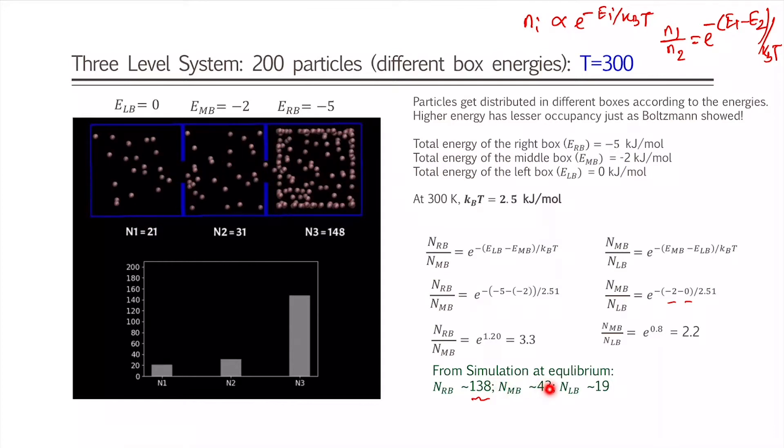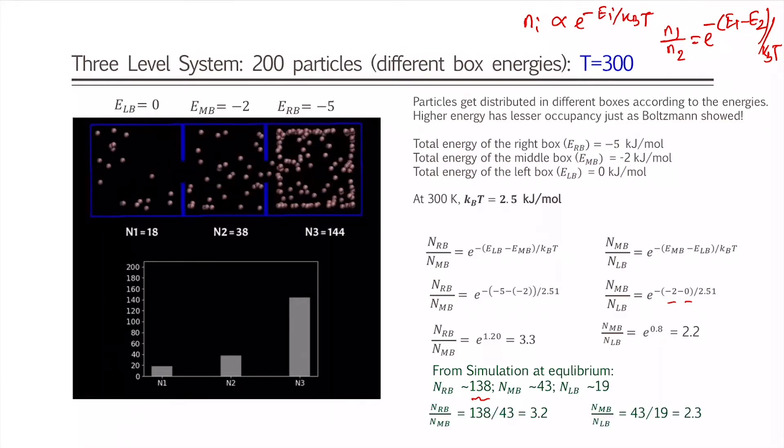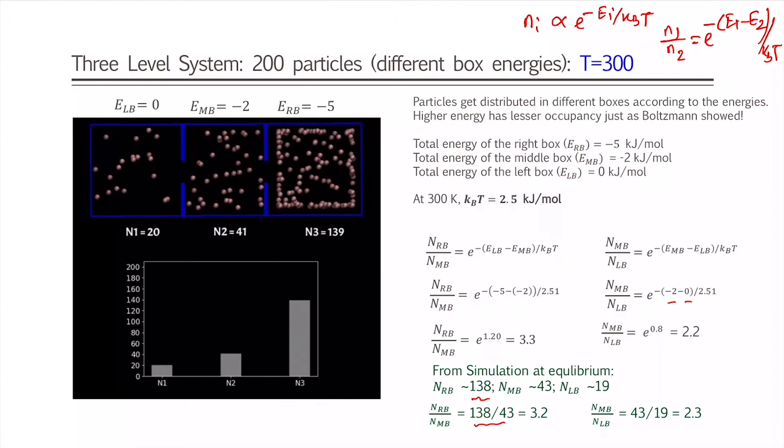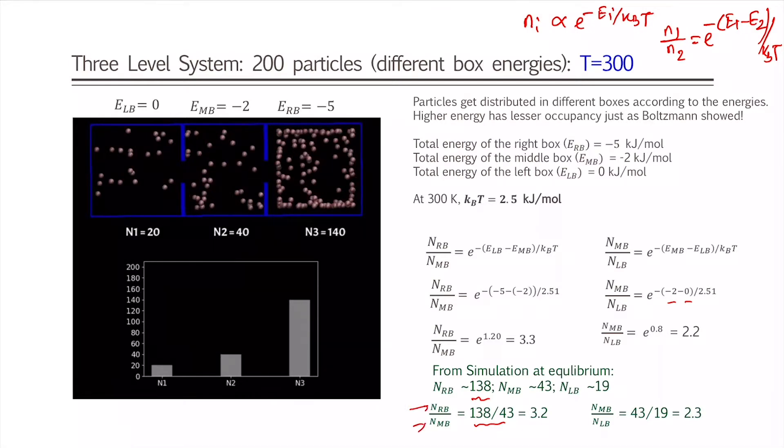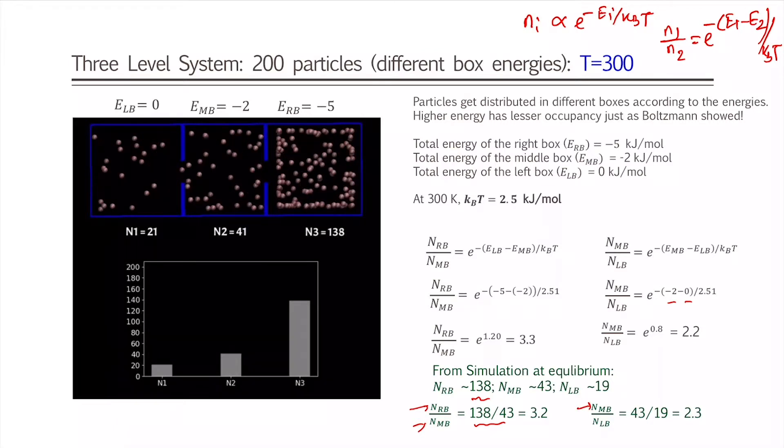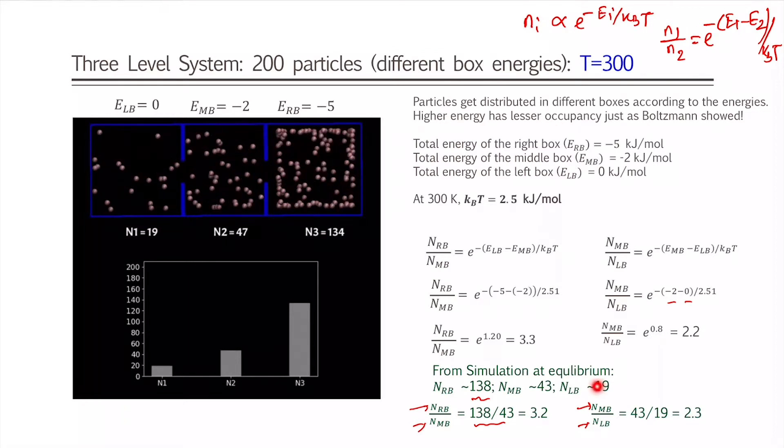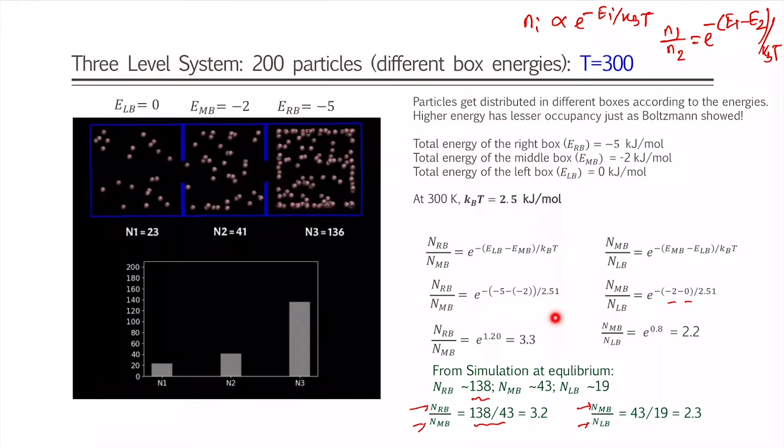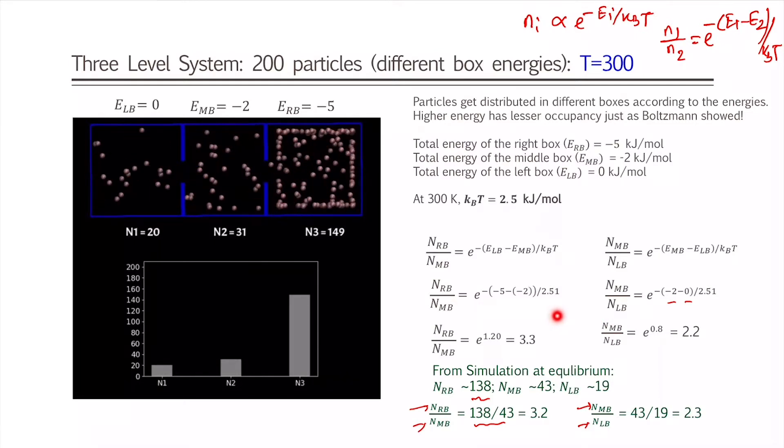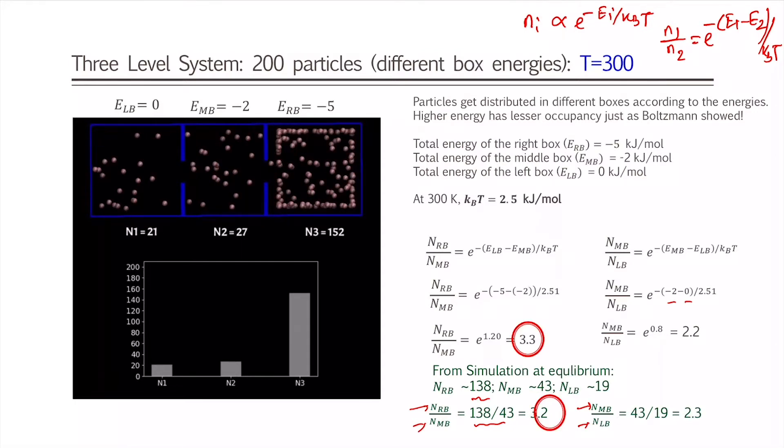Now let us compare with the equilibrium values of the simulations which are right now there approximately. At equilibrium, which is calculated by averaging over 3 nanosecond simulations at the end of the equilibration period of the simulation—we are not going to go into detail of that but we have taken care—the average number is coming out to be 138 for the right box and 43 for the middle box and 19 for the left box. When we take the ratios of the numbers, we get 3.2 for the ratios of right box and middle box and we get 2.3 for the ratios of the middle box and left box.